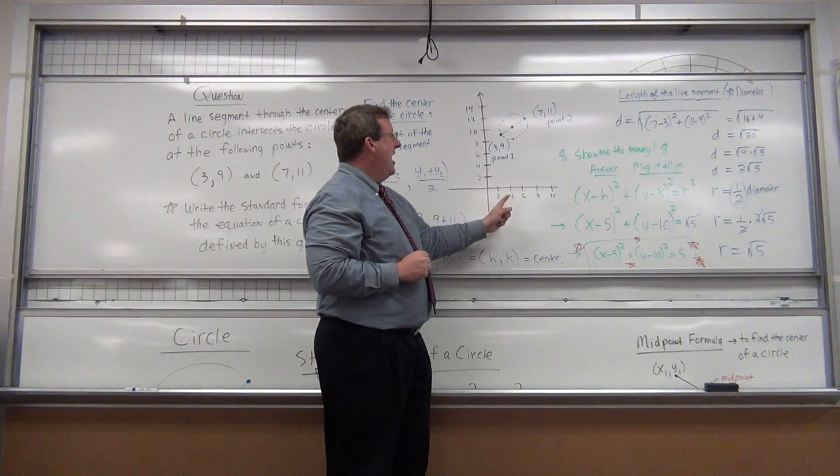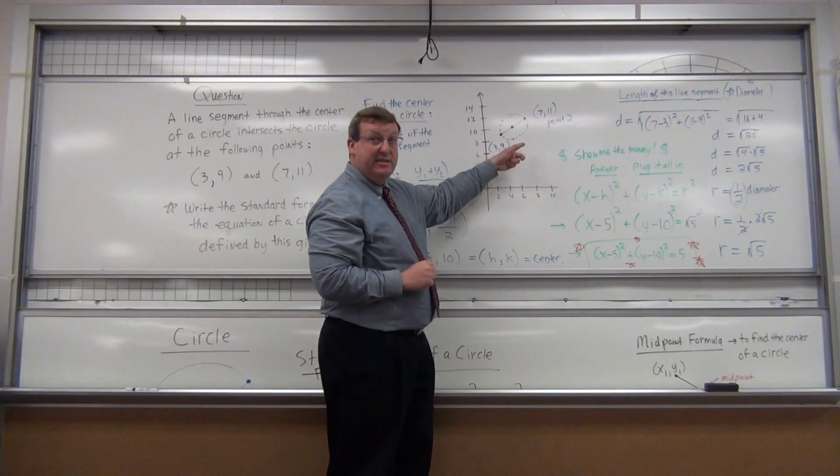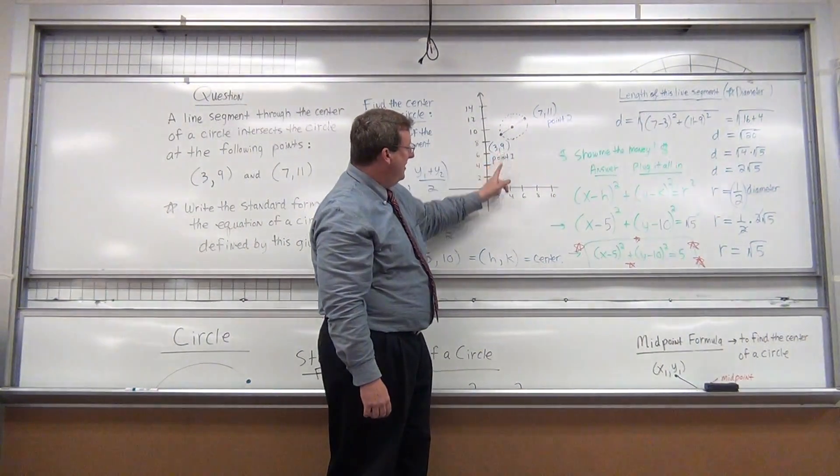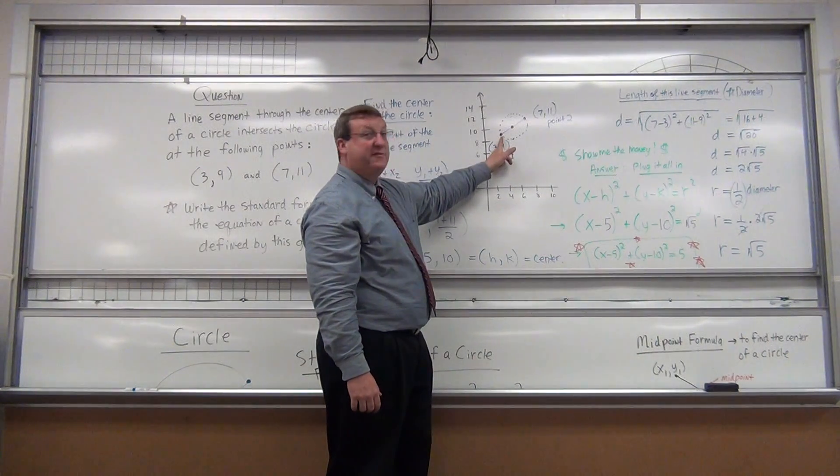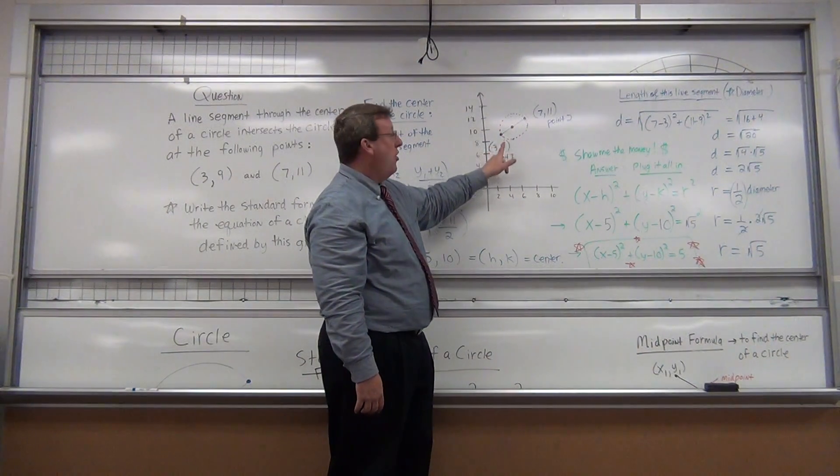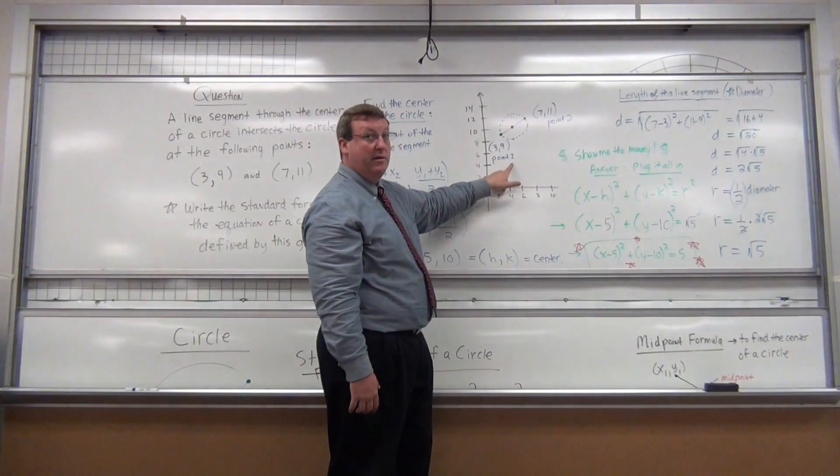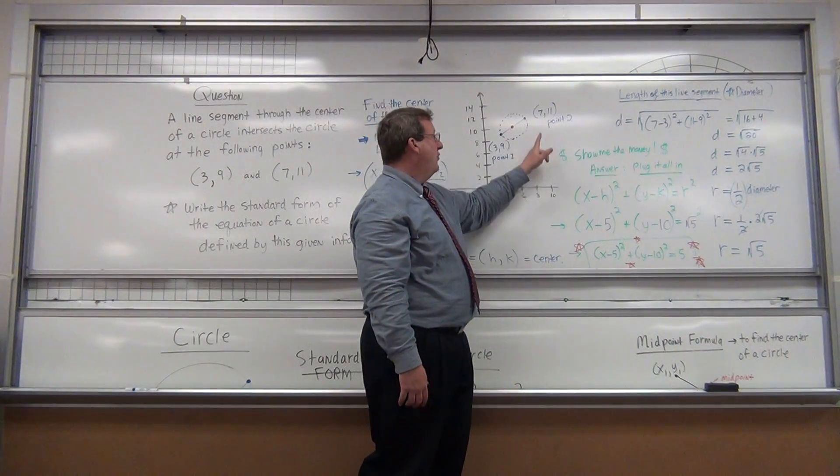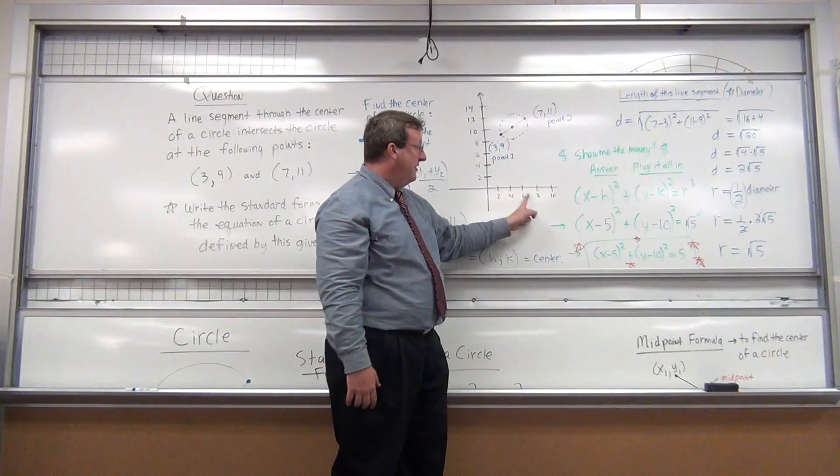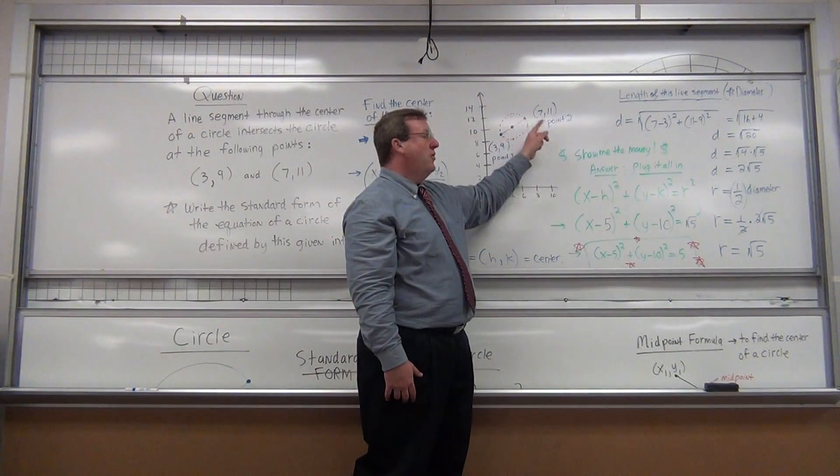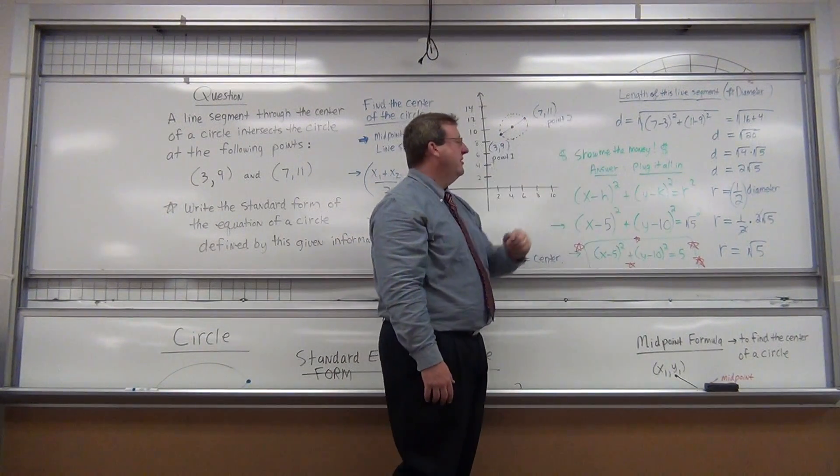Notice it says a line segment through the center of a circle at these two points. So over here, I've kind of, first of all, I've plotted these two points. (3, 9), you go over 3 and up 9. That's where this first blue dot is. This is the ordered pair (3, 9). I called it point 1. And then I plotted the point (7, 11). So I go 7 over and 11 up. And I have these two blue points. Call this one point 2.